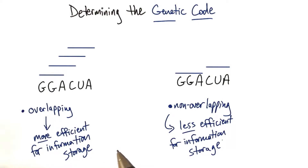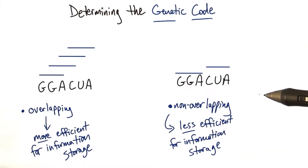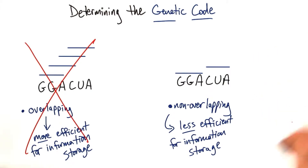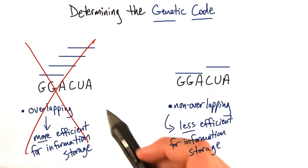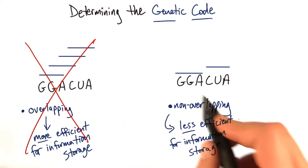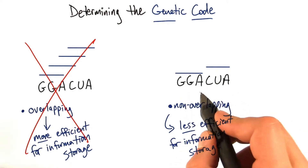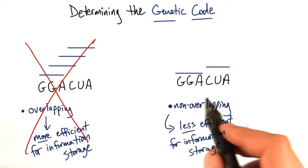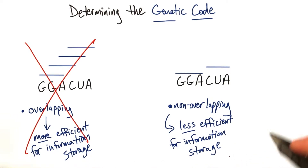Although George Gamow thought information would be stored most efficiently in the overlapping model, in reality the triplet code is read in a non-overlapping fashion — actually the less efficient method. Obviously if we were designing a system, this doesn't make a lot of sense from an efficiency standpoint. We can get more information stored in the overlapping model compared to the non-overlapping model, where each codon has to be its own discrete unit. It turns out that this messiness, this inefficiency, is a result of evolution, and in particular some molecular constraints of the system that are slightly beyond the scope of our material here.